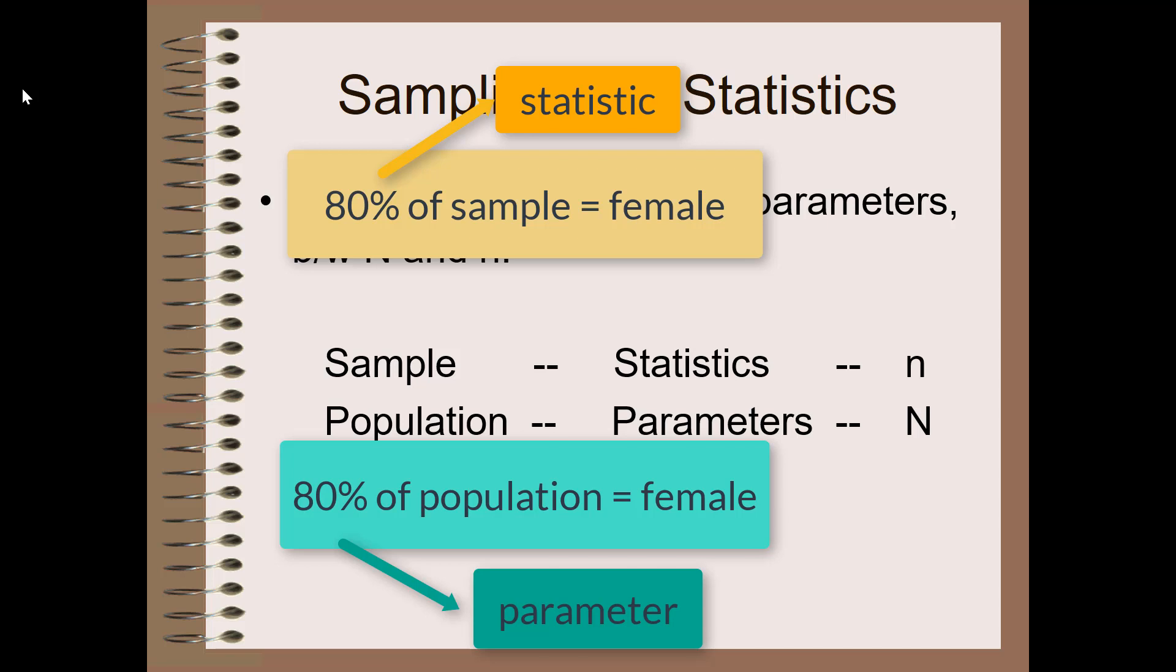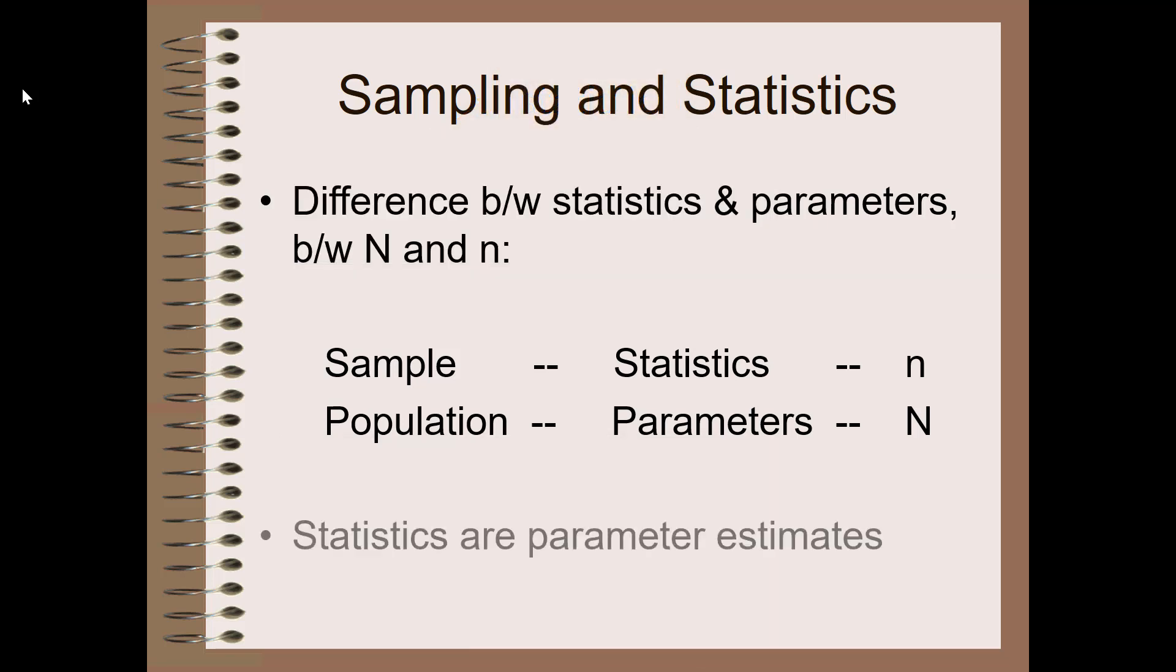Statistics estimate parameters. This goes back to that generalizability question. If I say 80% of my sample are female, and I've used a particular sampling method that is likely to assure good external validity, good generalizability, then that statistic of 80% is a good parameter estimate. It is a good estimate of what the proportion of females is in the population of interest. Statistics are parameter estimates.